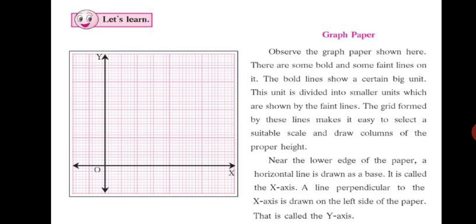Let's see what is a graph paper. Observe the graph paper shown here. You can also open your textbook to page 36. There are some bold and some faint lines on it. The bold lines, that is the dark lines, dark pink color show a certain big unit. This unit is divided into small units which are shown by the faint lines. So, each box, you will see 1 cm box which is of dark lines and inside it there are 10 horizontal lines, 10 vertical lines completing a square each. So, this way, the grid formed by these lines makes it easy to select a suitable scale and draw columns of the proper height.